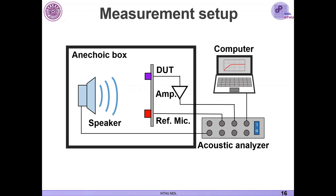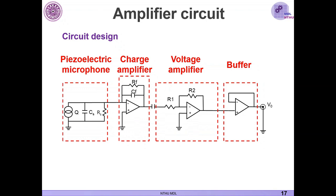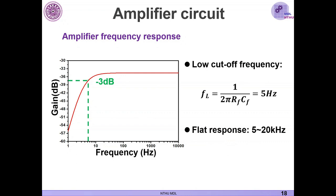So the amplifier circuit is composed of two-stage amplifier. And the first stage was the charge amplifier. And the second stage was the voltage amplifier. And noted that the charge amplifier has a low cutoff frequency, which is determined by the resistor and the capacitance right here. So here I designed the cutoff frequency to be at 5 hertz, which could ensure that there would be a flat response above 5 hertz. And it could ensure that the circuit will not influence the bandwidth of the microphone.